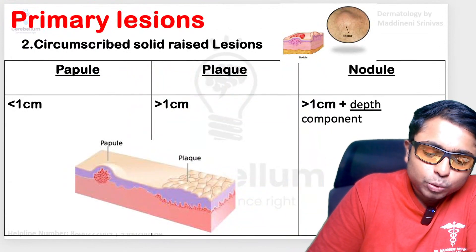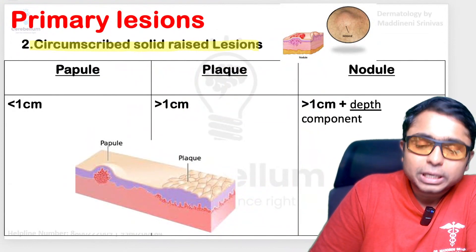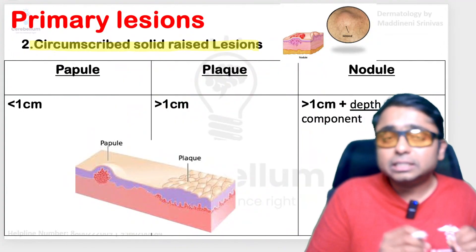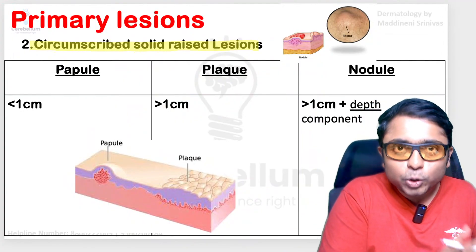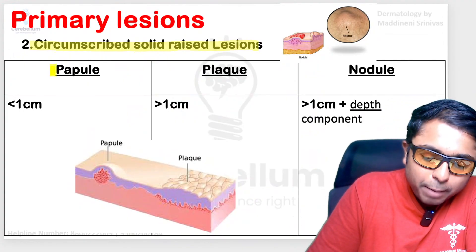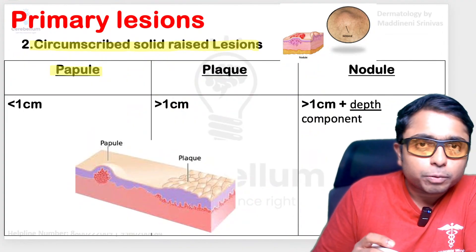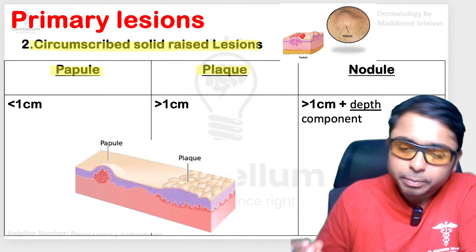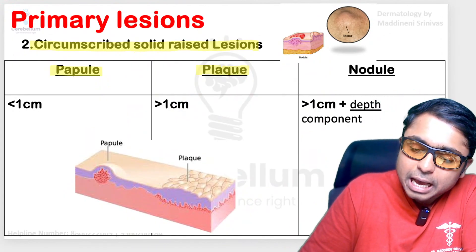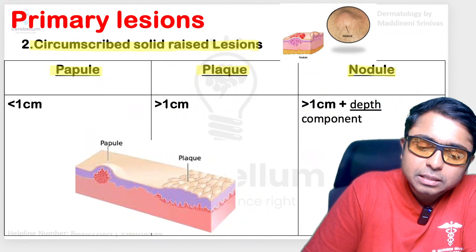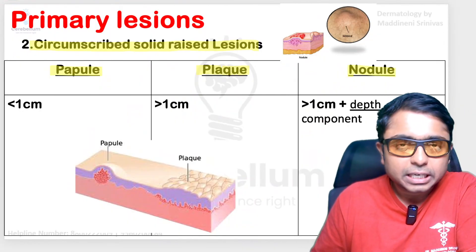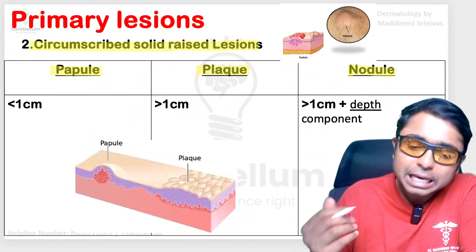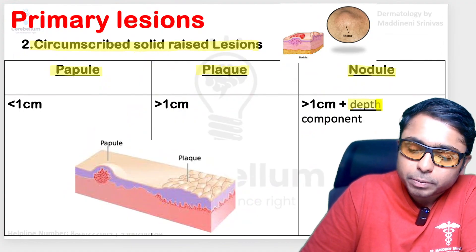Next, coming to the circumscribed solid raised lesions — depending upon the size, they are papule, plaque, and nodule. Papule is going to be less than one centimeter, plaque is going to be more than one centimeter in size, and nodule is also more than one centimeter, but the depth component is an additional point which we need to remember.